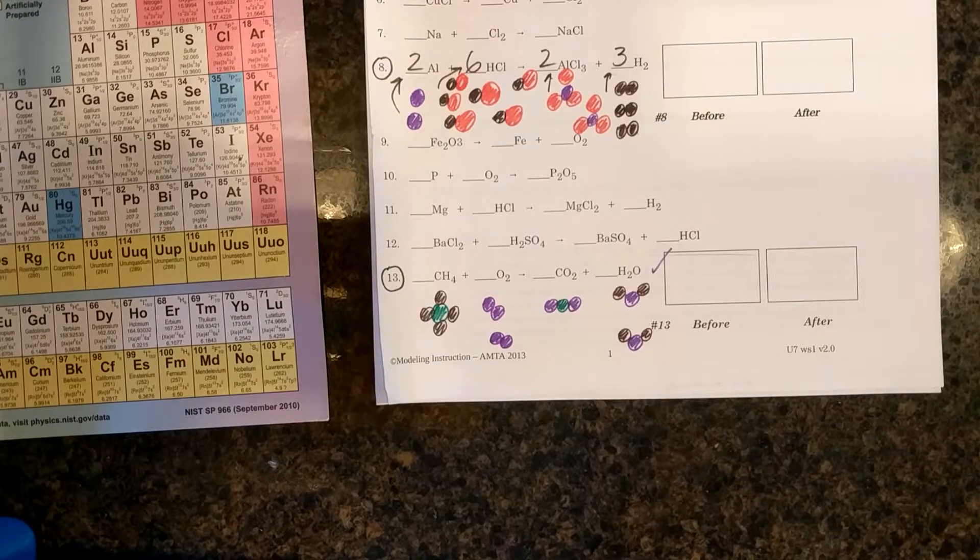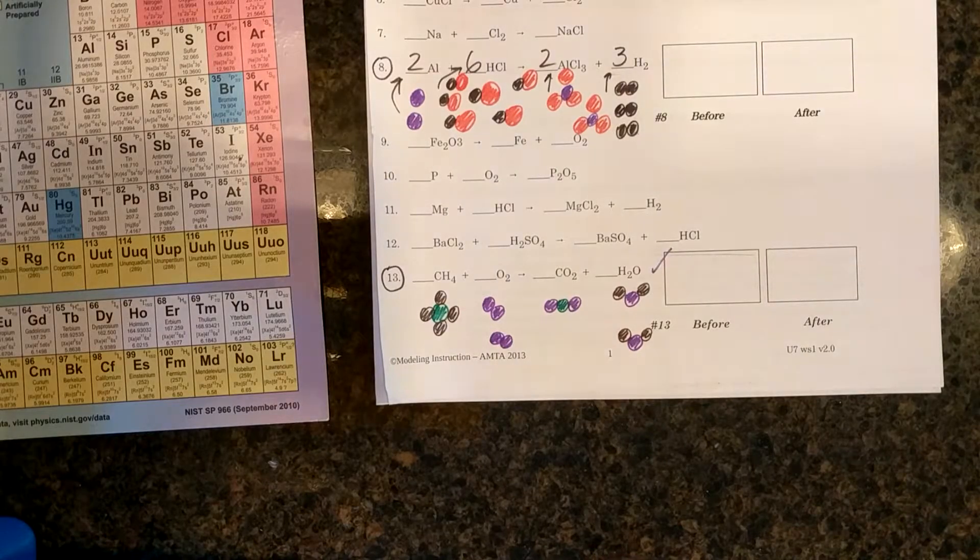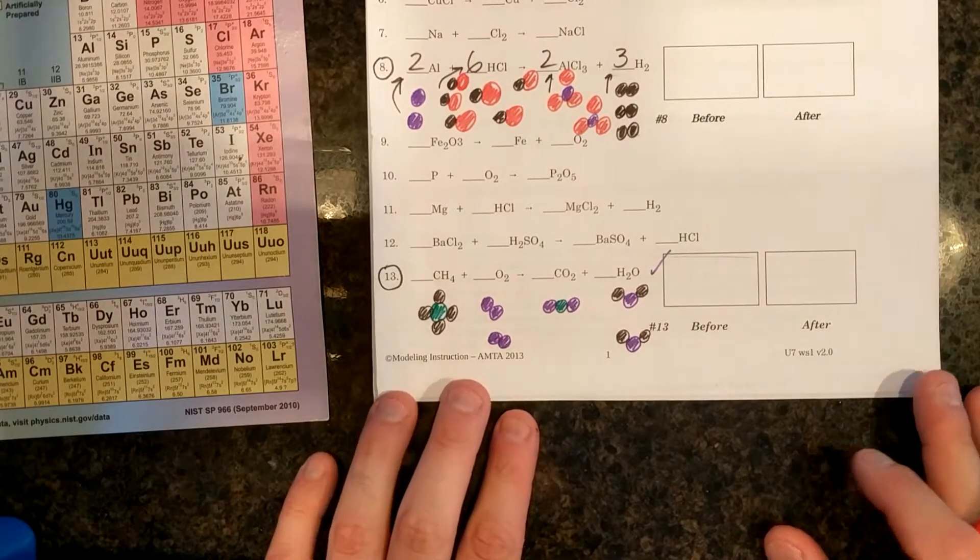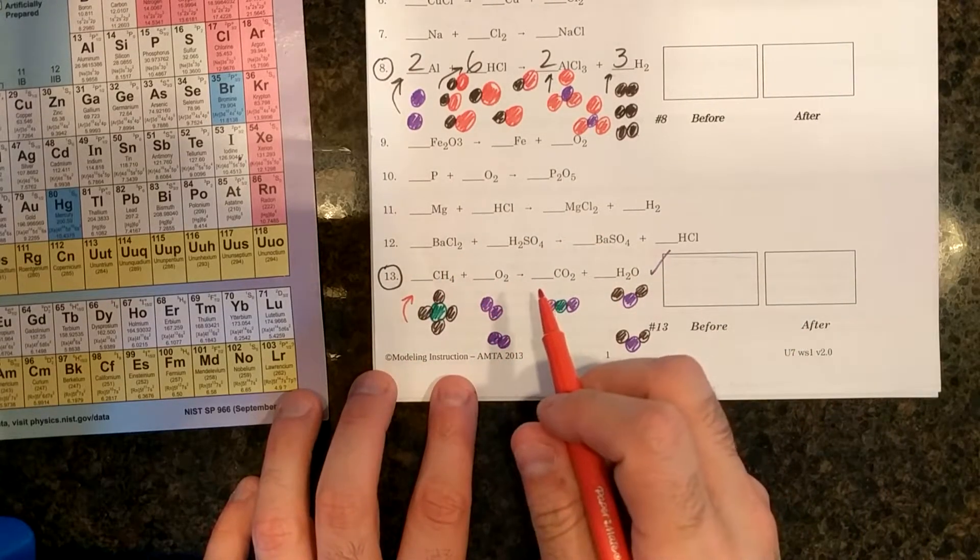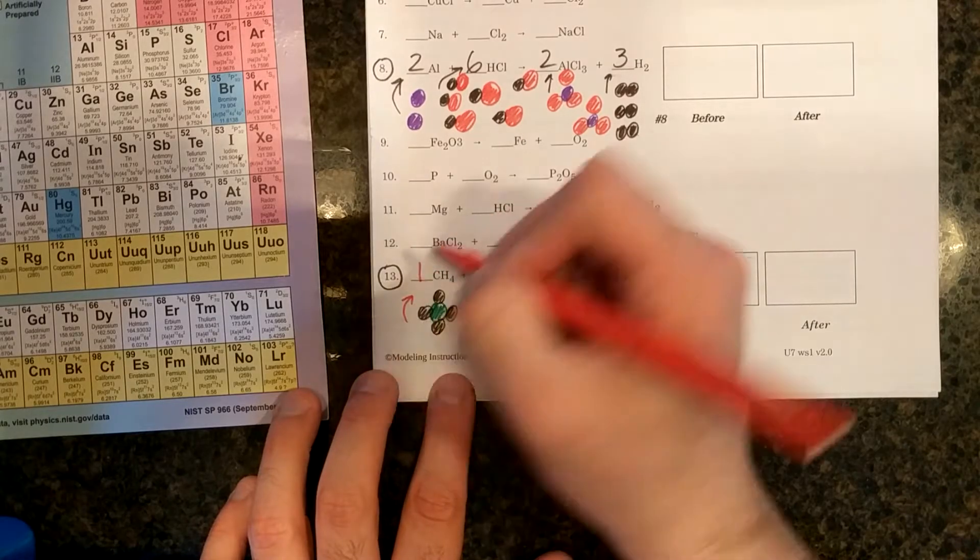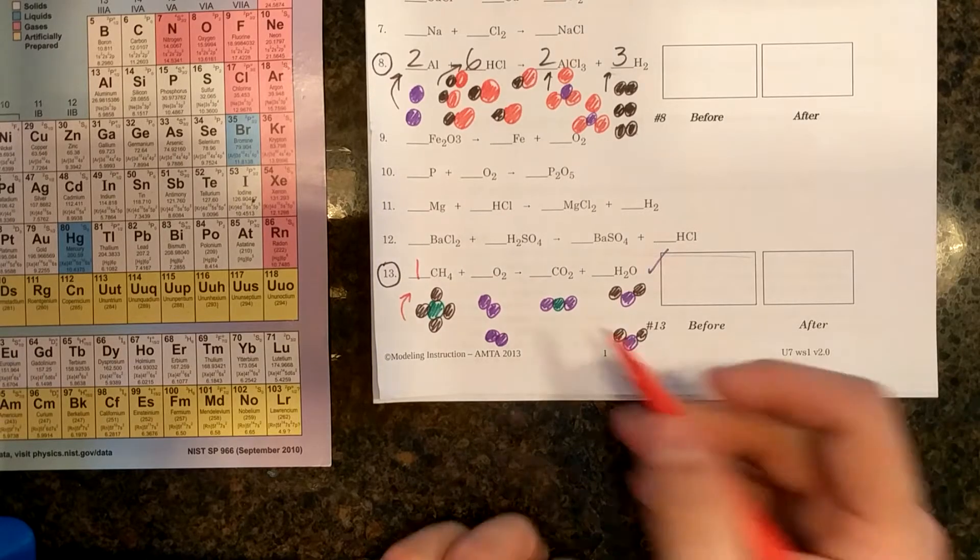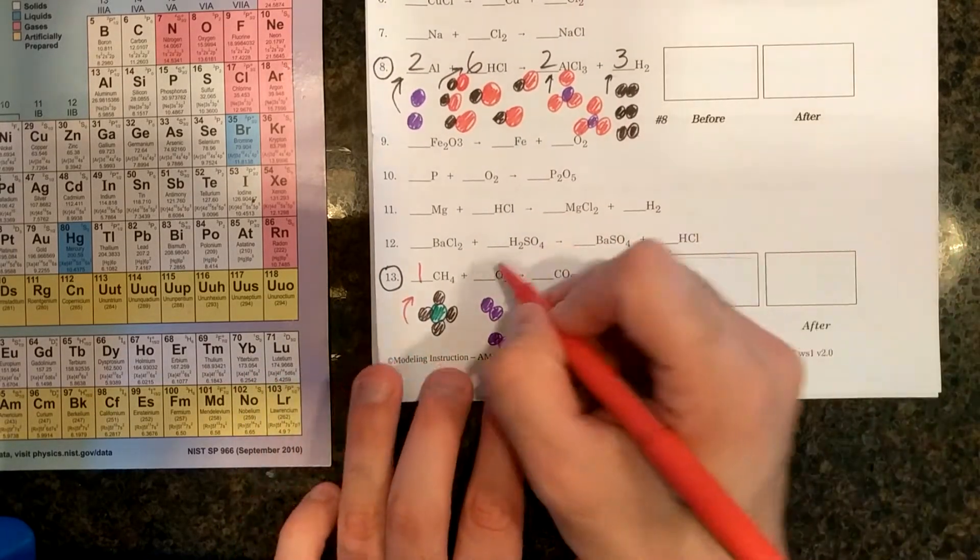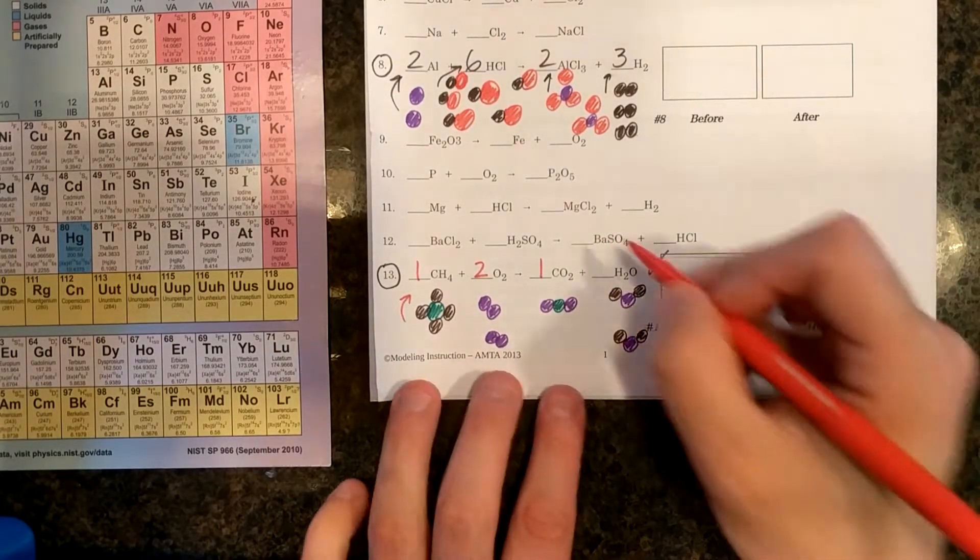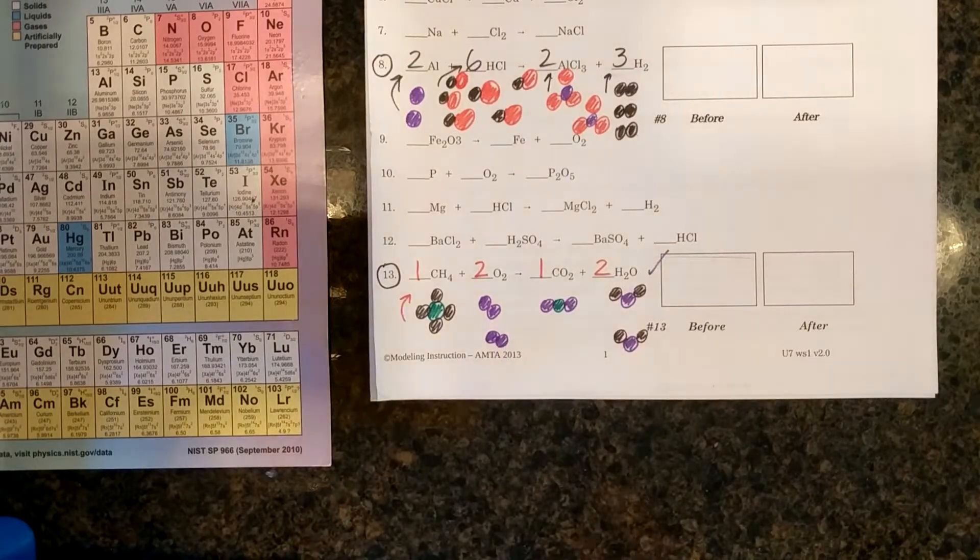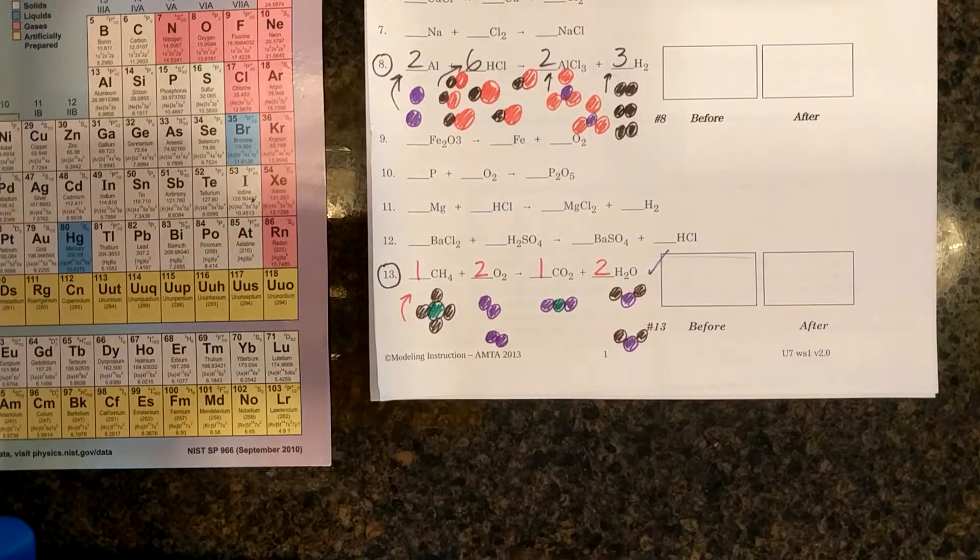Now my last step here is to put coefficients to tell me how many total molecules or atoms or elements were used to make this chemical reaction. So I only used one CH4. You don't have to put one, but I'm going to put it just so you know. One is usually assumed. It's kind of like when you have one X or X of the first. One is assumed. I used two O2 molecules. I made one CO2 and I made two H2O. So there, that is the balanced chemical equation for this reaction.